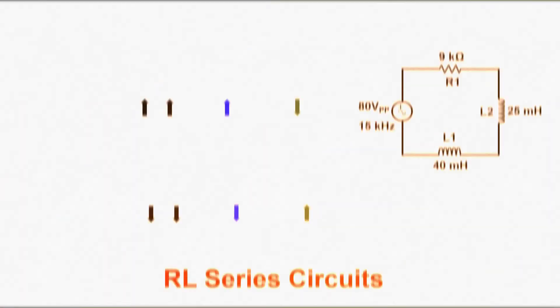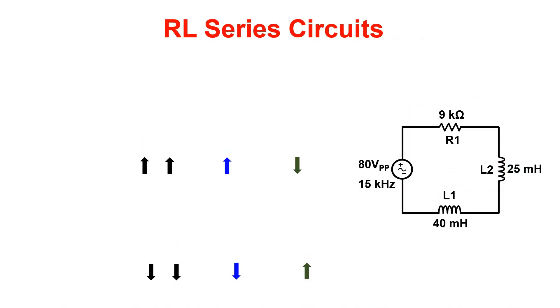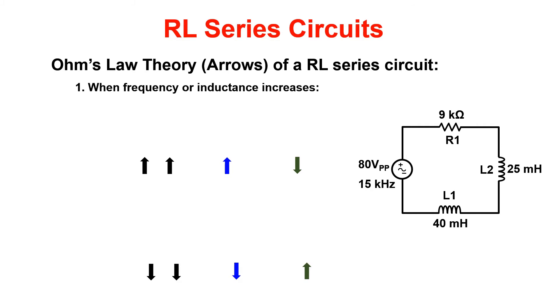If you remember from earlier in the video inductors are a reactive component meaning that when the frequency changes the ohmic value of the inductor changes. The formula to calculate inductive reactance is 2π times frequency times inductance.